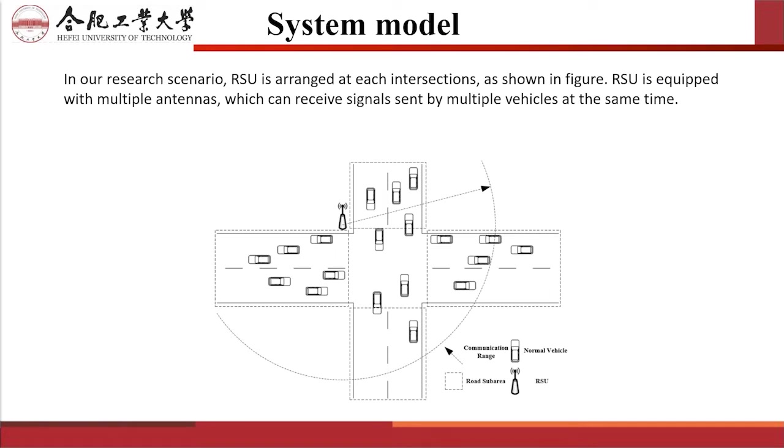In our research scenario, RSU is arranged at each intersection as shown in the figure. RSU is equipped with multiple antennas which can receive signals sent by multiple vehicles at the same time. As the uneven distribution of vehicles has an unbalanced impact on communication requirements, the coverage of each RSU area is divided into several sub-areas such as road sections, connection points, and entrances.